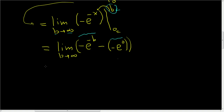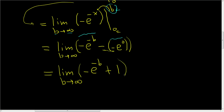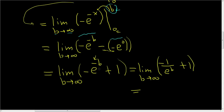This is equal to the limit as b approaches infinity of negative e to the negative b plus 1, since negative times negative is positive and e to the 0 is 1. We can rewrite this as the limit as b approaches infinity of negative 1 over e to the b, plus 1. As b approaches infinity, negative 1 over e to the b approaches 0, because e to the b is getting really big. So this is 0 plus 1, and the answer is just 1.